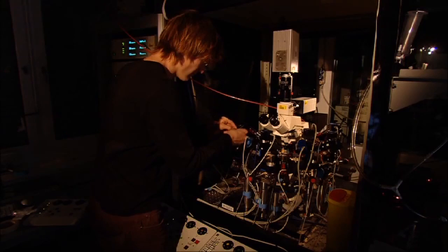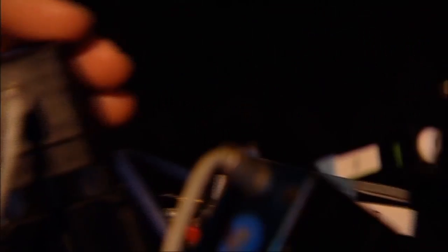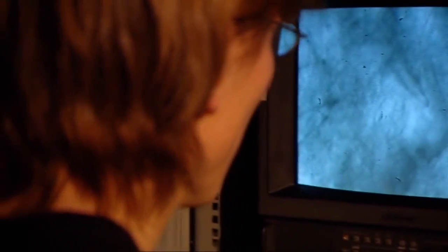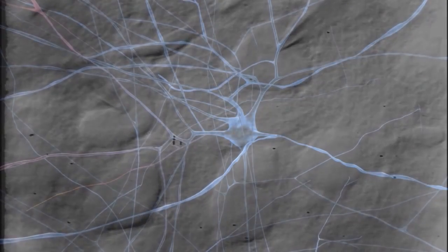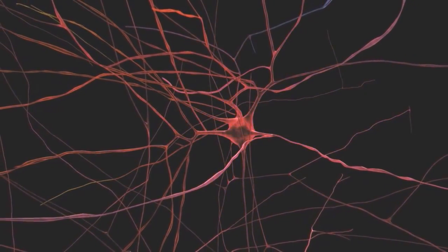So the way that we do these experiments is we need two kinds of data sets. One is we need lots of model neurons. To get them, we record from a cell, inject a dye into them and draw them in three dimensions. We do that for many cells, so we've got many model neurons.